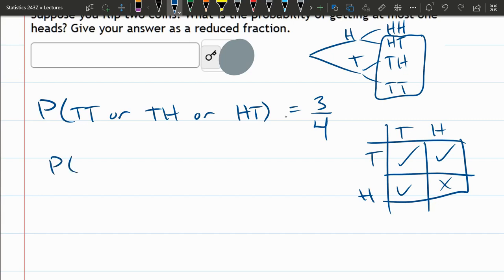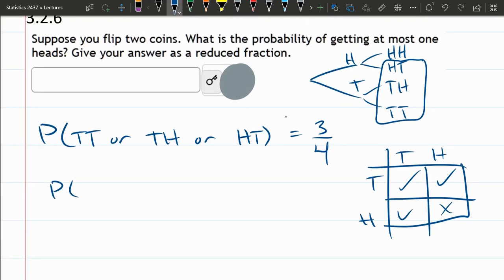You could also think of this as at most one head. So what's the probability of getting two heads? And we want not, the probability of not two heads.